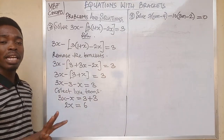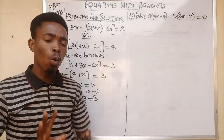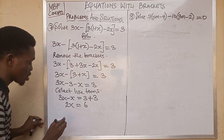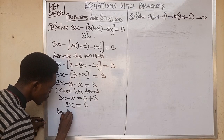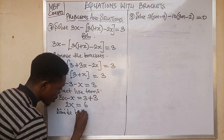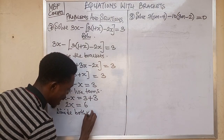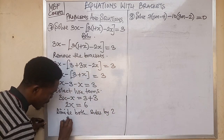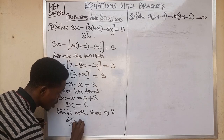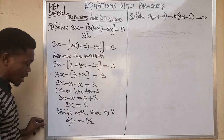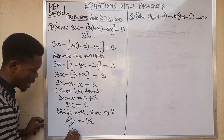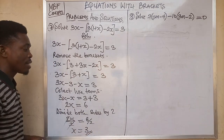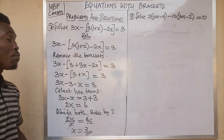The next step is to divide both sides by the coefficient of x. The coefficient of x is 2, so we divide both sides by 2. We have 2x over 2 equal to 6 over 2. 2 divided by 2 gives x, and 6 divided by 2 gives 3. So x equals 3.